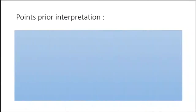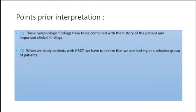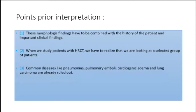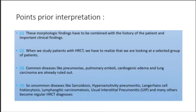Prior to interpretation: these morphologic findings must be combined with the patient's history and important clinical findings. When studying patients with HRCT, we have to realize we are looking at a selected group of patients. Common diseases like pneumonias, pulmonary embolism, cardiogenic edema, and lung carcinoma are already ruled out, so uncommon diseases like sarcoidosis, hypersensitivity pneumonitis, Langerhans cell histiocytosis, lymphangitic carcinomatosis, and UIP become regular HRCT diagnoses.